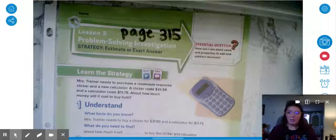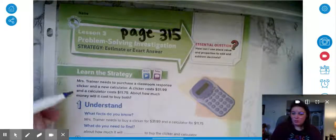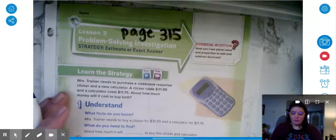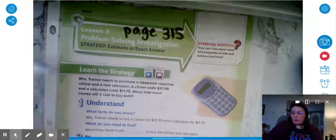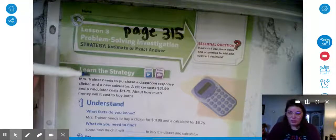So let's use our UPS check strategy. The U stands for understand the problem. So we ask ourselves what facts do we know and what do we need to find? So when I go back and reread my problem for a second time, I want to look for facts that I need for my problem.